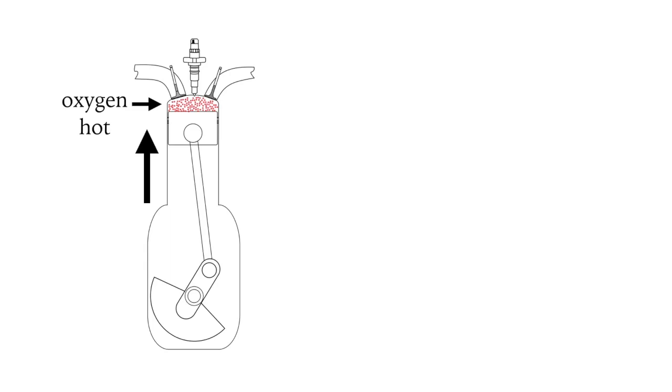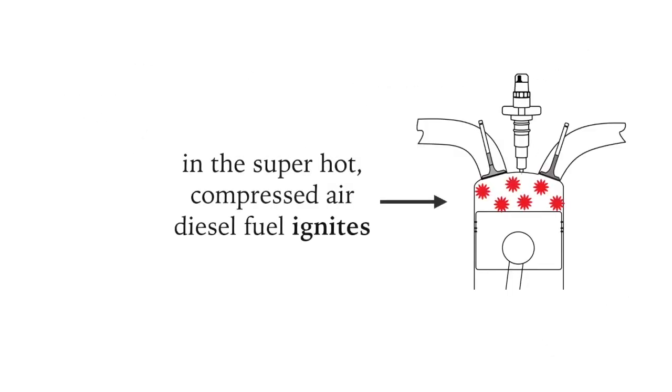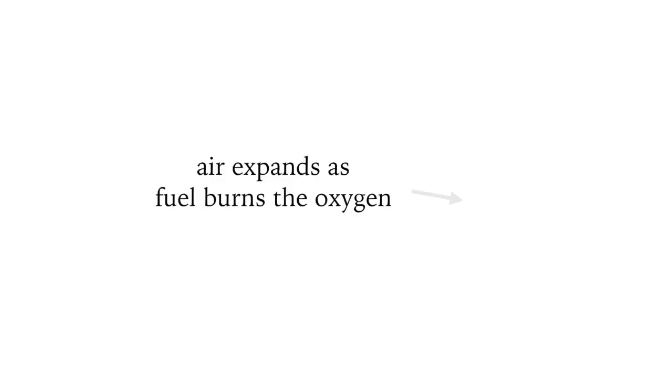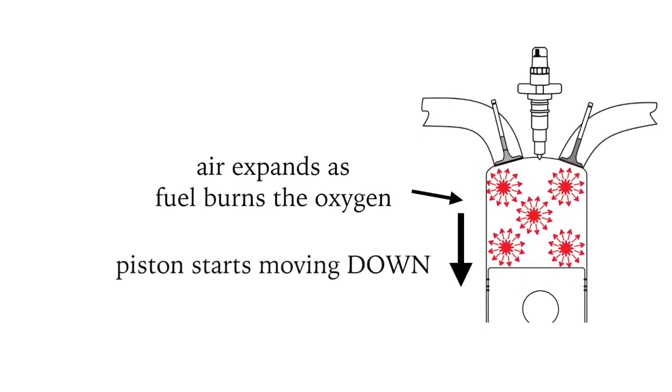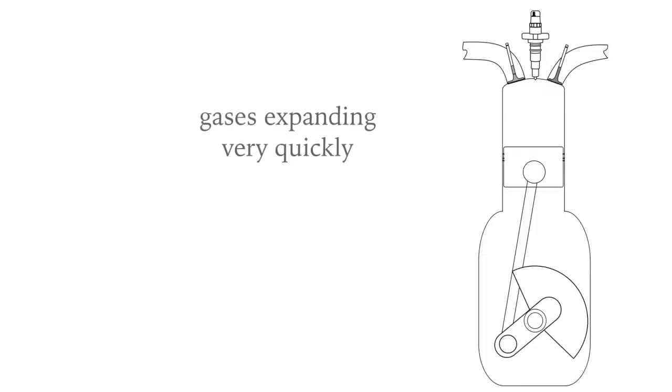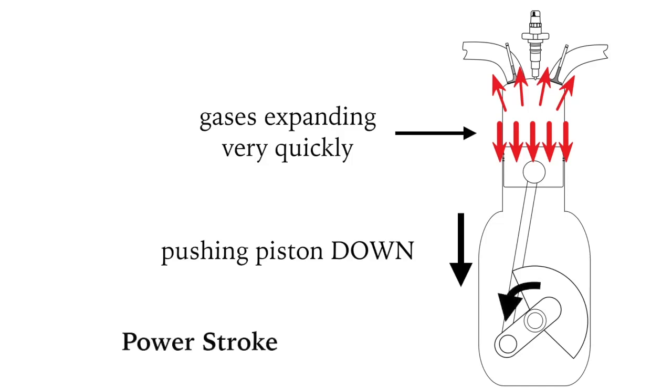And that's what happens next. Just before the piston gets to the top of the compression stroke, the injector sprays atomized mist of diesel fuel into the cylinder. The compressed air is about 600 degrees celsius and ignites immediately. The air expands as the fuel burns the oxygen, pushing the piston down. For good reason, this is called the power stroke. It might also be called the work stroke because it's the downward stroke of the piston pushed by the rapidly expanding gases that turns the crankshaft and moves the boat through the water via the propeller.